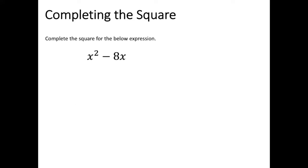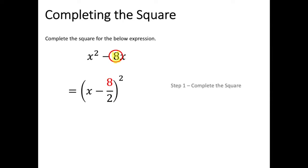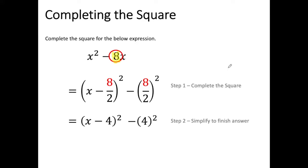Now let's complete the square for x squared minus 8x. My b value is going to be 8. Substituting that in: x minus 8 over 2, squared, and then subtract 8 divided by 2 squared. Remember, the operation sign in the bracket follows what is originally in the expression. Simplifying, 8 divided by 2 is 4, so it's x minus 4 squared minus 4 squared. And 4 squared is 16, so it's x minus 4 squared minus 16.